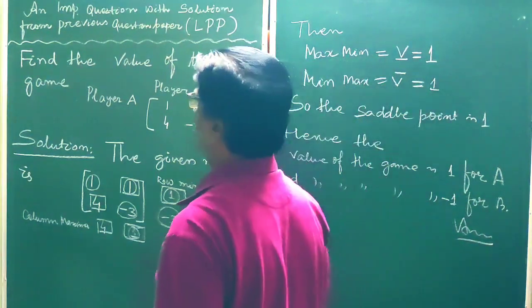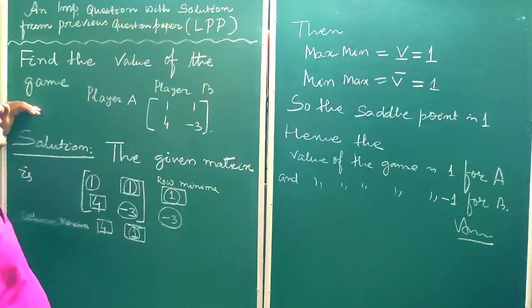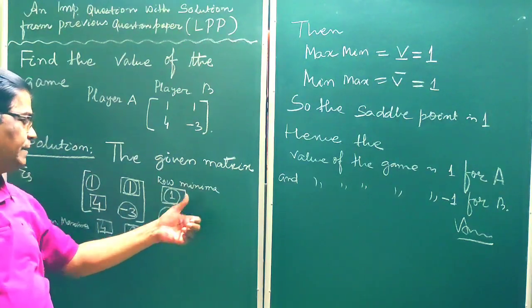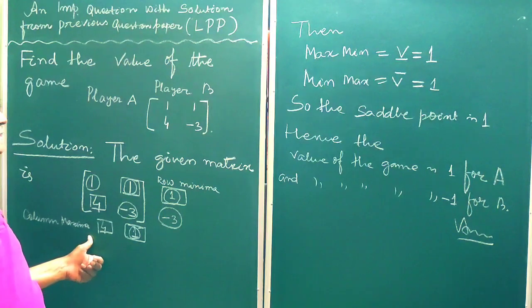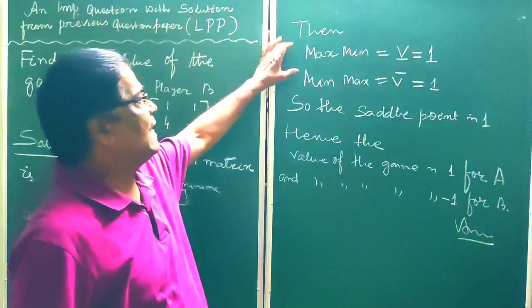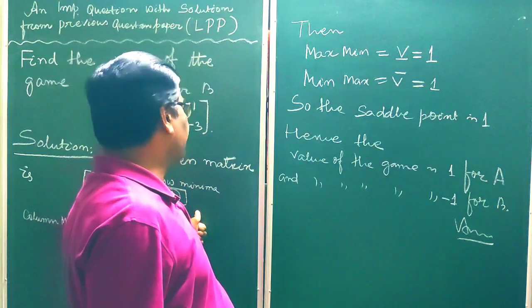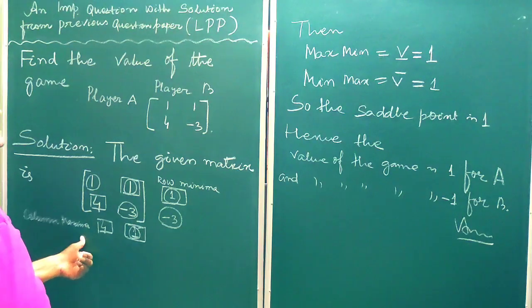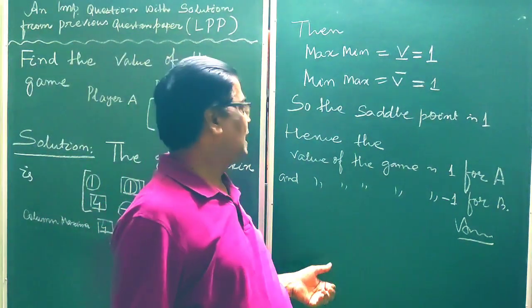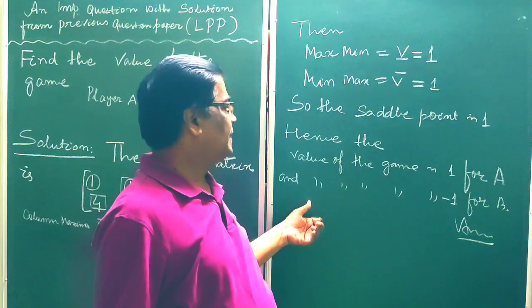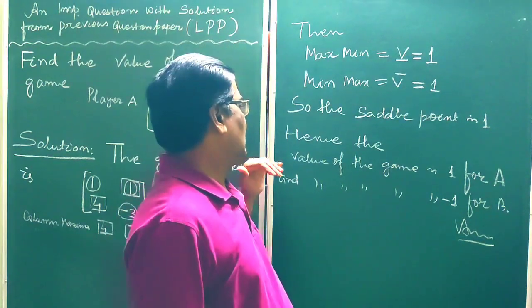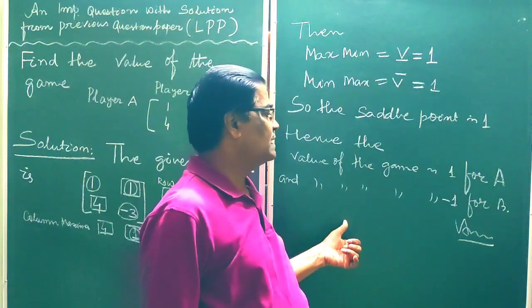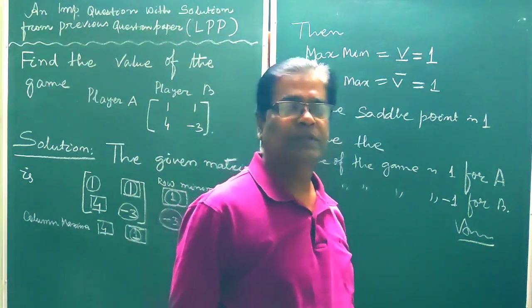So in this question, we have to find the value of the game. In order to do so, first we find row minima, then column maxima, then the maxmin element from row minima which is 1, then the minmax element from column maxima which is also 1. So the saddle point is 1, and hence the value of the game is 1 for player A and minus 1 for player B.